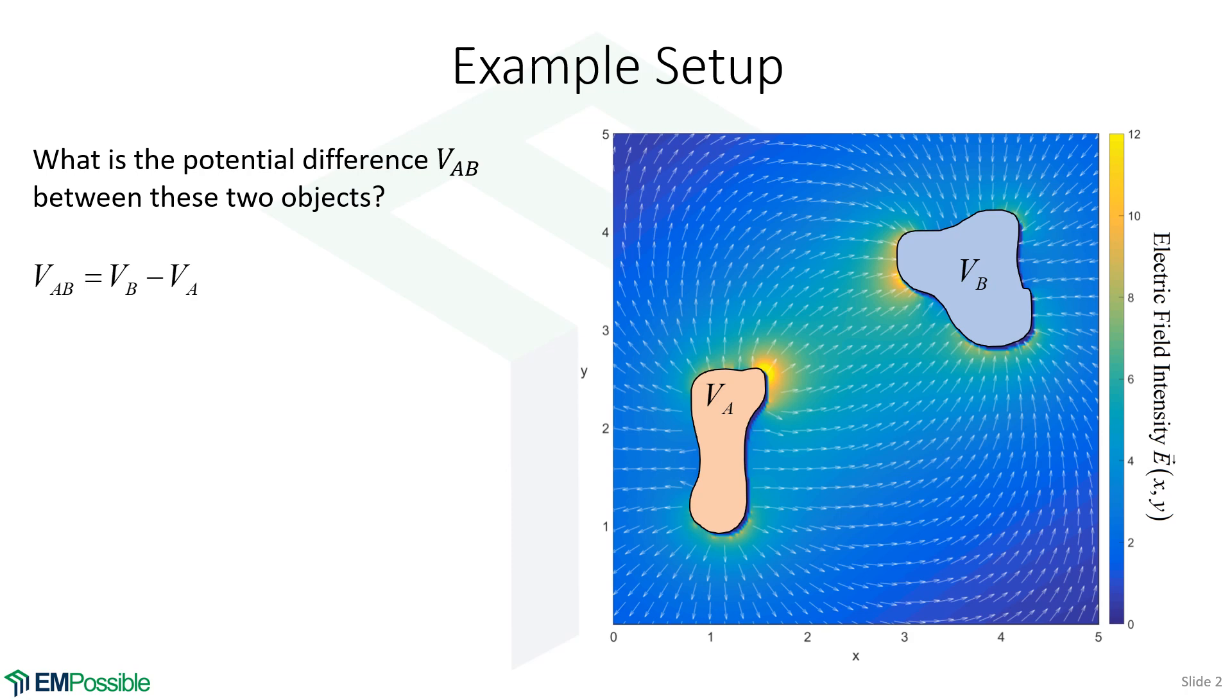We're starting off with a picture, a very realistic picture of the electric field between two very strange objects. The color bar to the right tells us the magnitude of the electric field. The little arrows show us the direction.